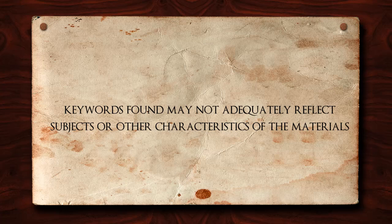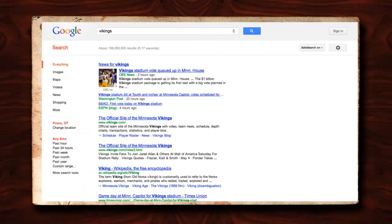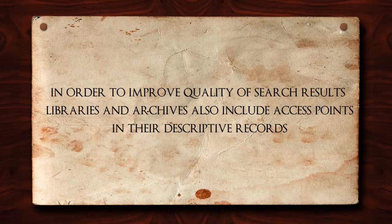Keyword searching is very literal and also cannot distinguish between words with multiple meanings. For example, doing a search on Google for Vikings will return a diverse list of resources reflecting the variety of uses of the term Vikings. While most sections of archival descriptions are primarily narrative, in order to improve the quality of search results, libraries and archives also include access points in their descriptive records.